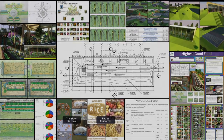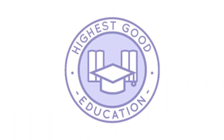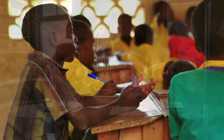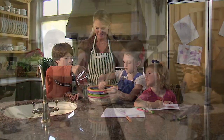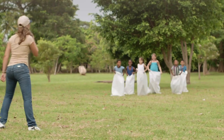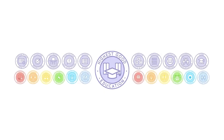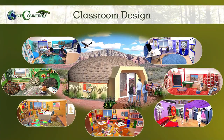The next component is Highest Good Education. This component is complete and pretty much ready to launch once we're on the property. One Community's approach to Highest Good Education is designed for all age groups, adaptable to any schooling environment, inspiring and fun for all participants, and includes national standards, all subjects, lesson plans, teaching strategies, learning strategies and tools, classroom design, and more.